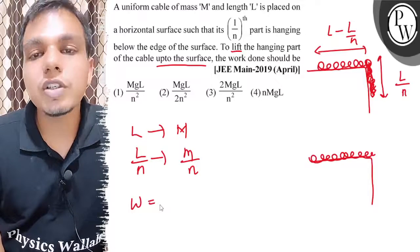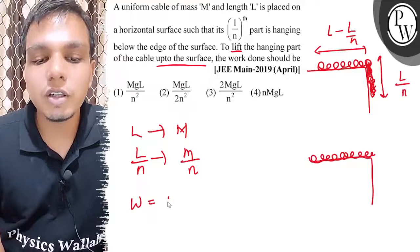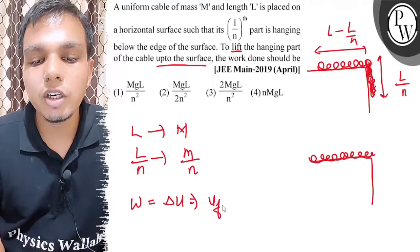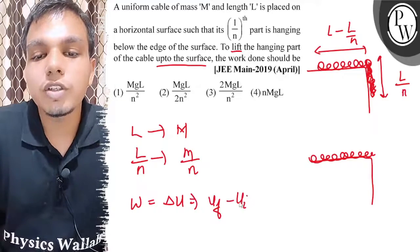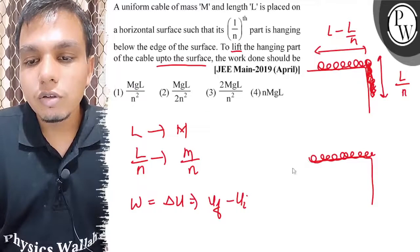Gravitational force is a conservative force, and in conservative force we can write change in potential energy. That is final potential energy minus initial potential energy. So this is our reference.